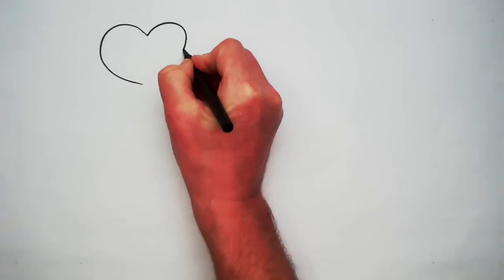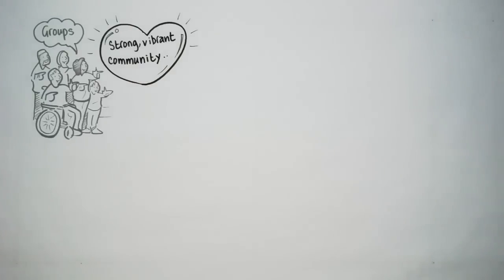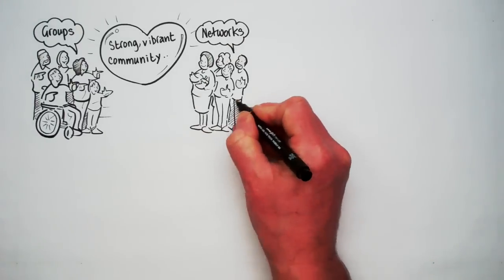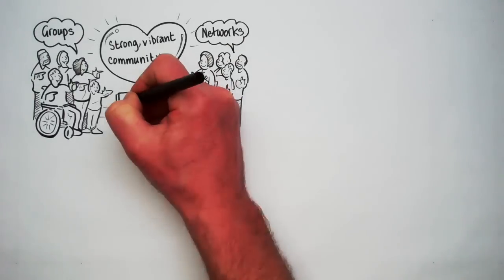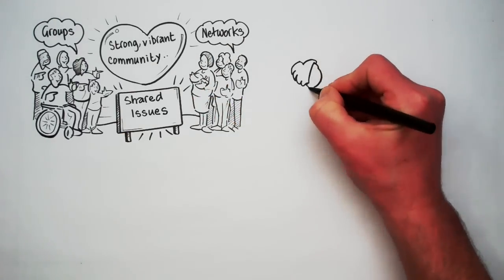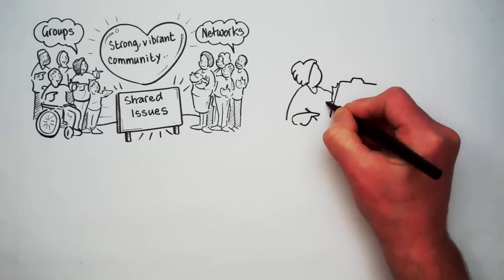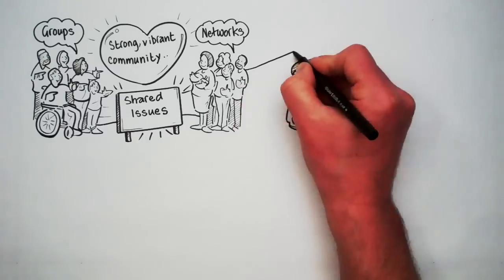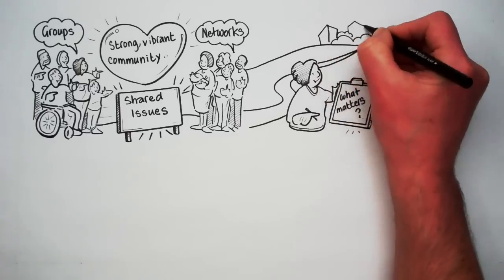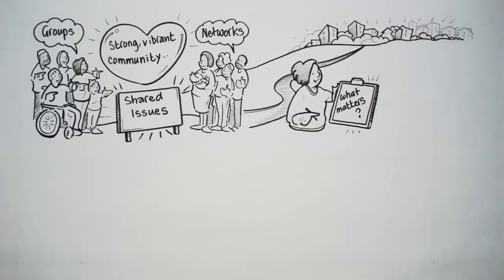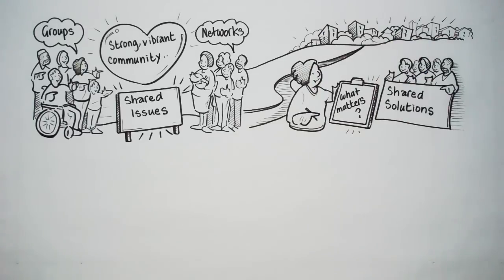A strong, vibrant community will have a range of groups and networks who work together with their wider community to tackle shared issues. The process usually involves finding out what issues really matter, what effect they have on the community, and how best to work towards shared solutions that benefit all.